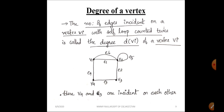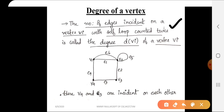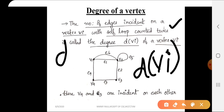The next important term is the degree of a vertex. The degree of a vertex means the number of edges incident on a particular vertex. The number of edges incident on a vertex vi is called the degree, denoted as d(vi). If we consider v1, the degree is d(v1).